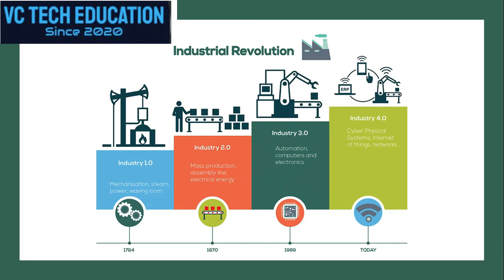Industrial Revolution started its first step by introducing water stream based power for industry. They used steam locomotive mechanism that produces power by burning materials such as charcoal, starting at the 18th century, which comes under Industry 1.0. The second stage involves electricity based manufacturing at a large scale, using a human resource with labor management system for mass production and assembly lines using electrical power.